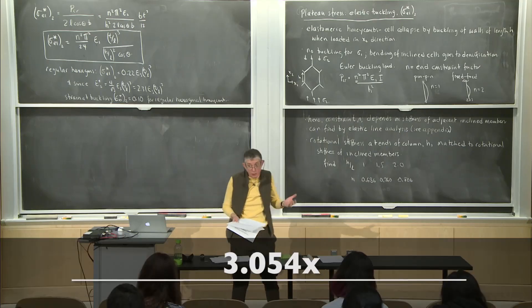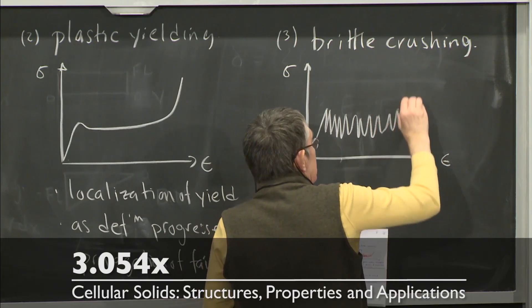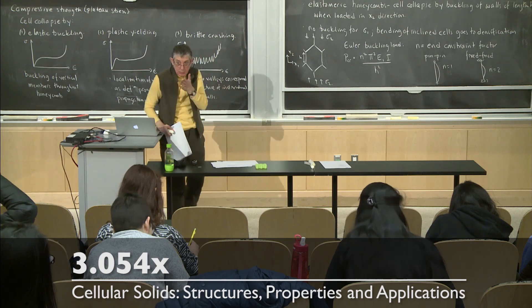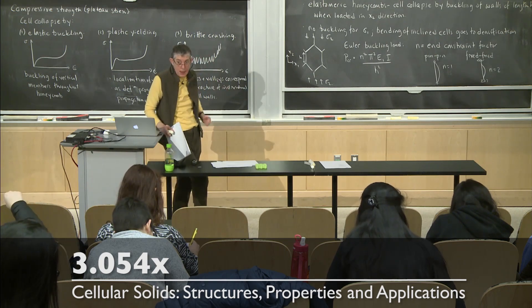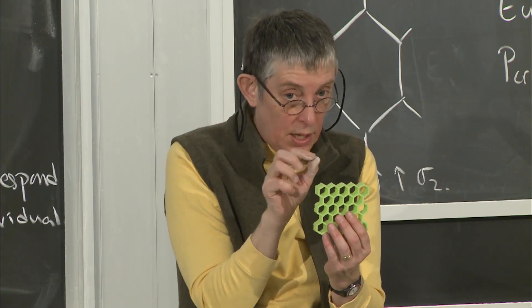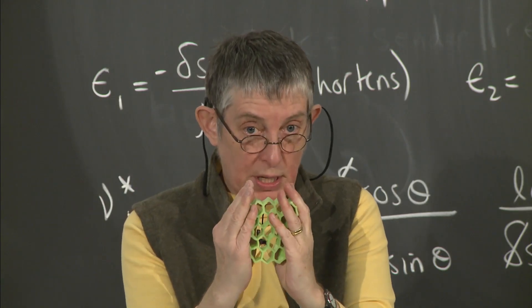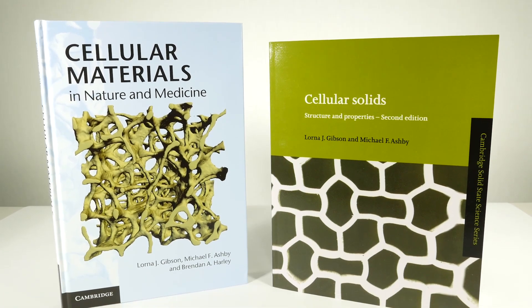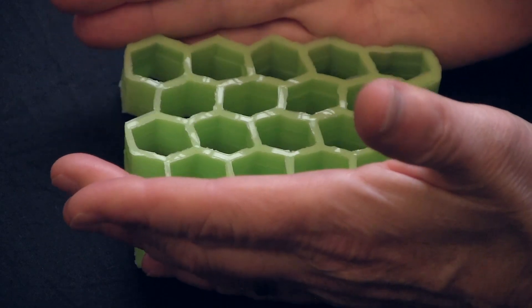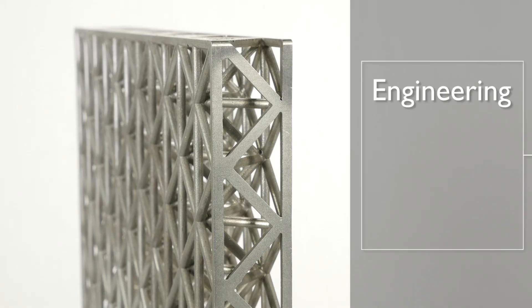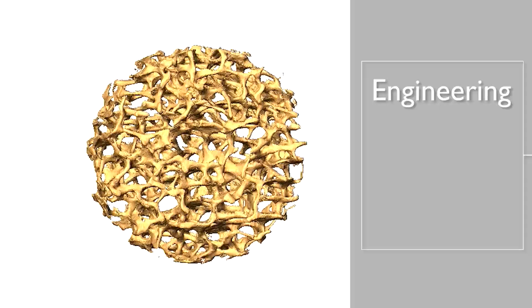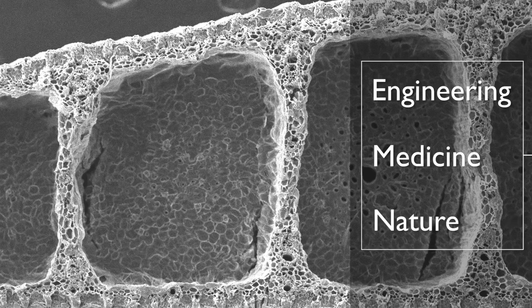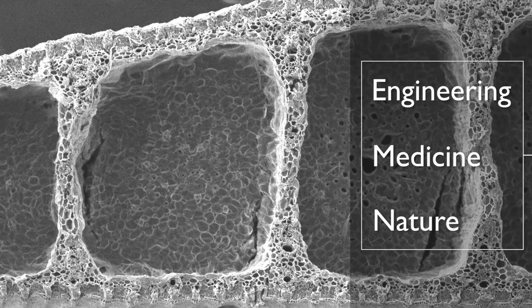Together in 3054X — Cellular Solids: Structure, Properties, and Applications — we'll learn how to model the structure and mechanics of a wide range of cellular materials, and learn how to apply these models in engineering design. Using these models, we'll look at applications that exploit the unique properties of cellular materials in engineering, medicine, and nature in three separate modules.